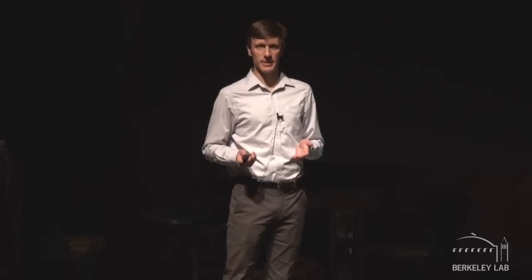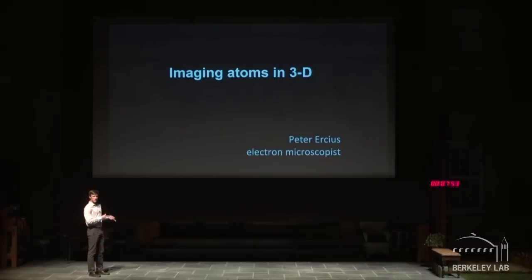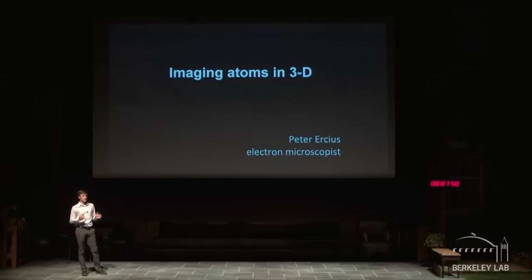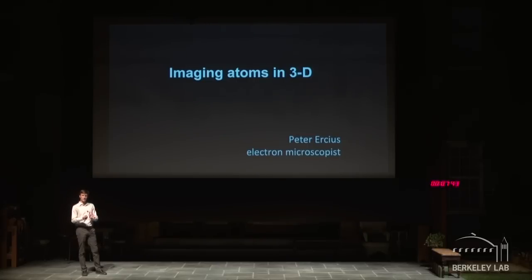A lot of you in school might have been told that the building blocks of materials are atoms. But have you ever actually seen an atom? What I'm going to show you today are some images in two dimensions of atoms that we take on our microscope, one of the most powerful electron microscopes up at Lawrence Berkeley National Laboratory. And I'm going to tell you how that's not even enough — that we have to go to actually imaging them in 3D.